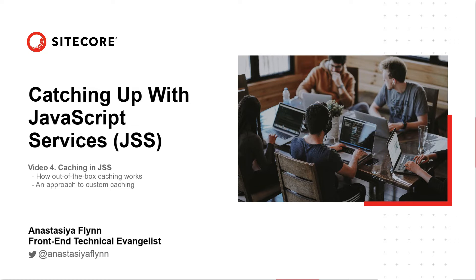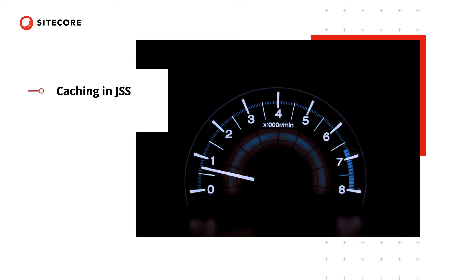Today's topic is about caching in JSS. Enabling caching is the easiest way to improve performance in your JSS app. After watching this video, you will have a better understanding of how caching works in JSS, and you will learn how to utilize it in your performance strategy to get those blazing fast pages.